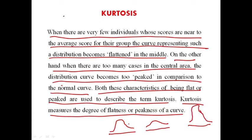This is what we call a leptocurtic curve — it is too peaked. As you can see the peak, it is too peaked. In the case of platycurtic, it is flatter than the normal curve. And this is a normal curve.